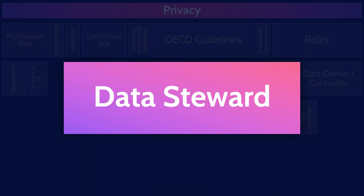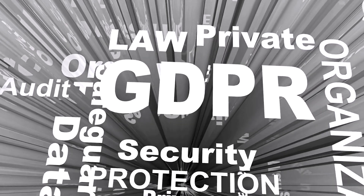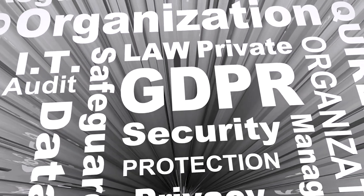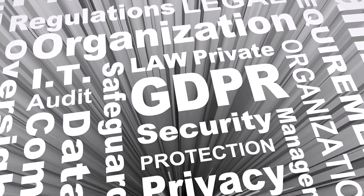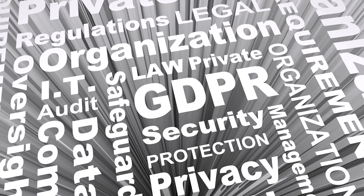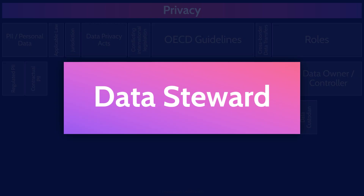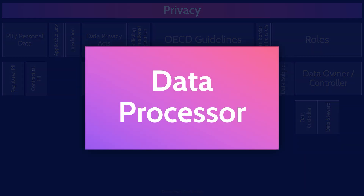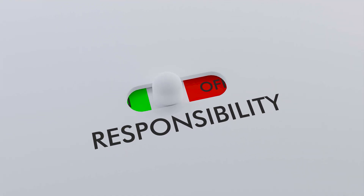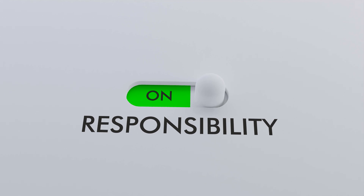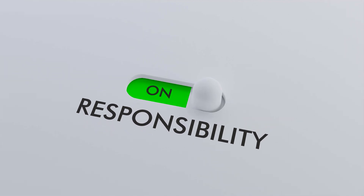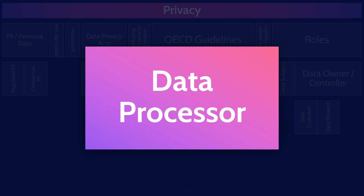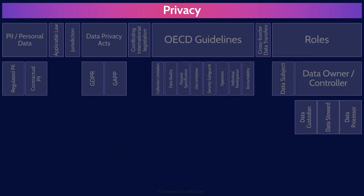Data stewards, on the other hand, have a business responsibility for the data, meaning they are responsible for ensuring data governance, data quality, and compliance. Data stewards are typically employees from the business who are responsible for ensuring the data is useful for business purposes. Data processors, as the name implies, are responsible for processing data on behalf of the owner. A typical example of a data processor is a cloud service provider — they are storing and processing data on behalf of the owner.